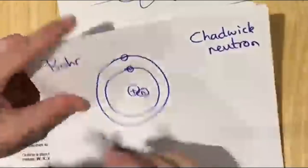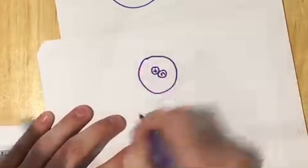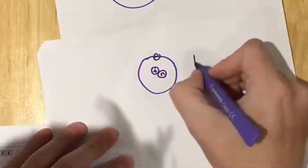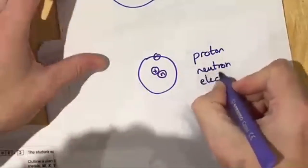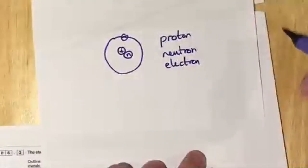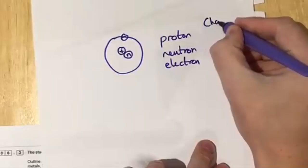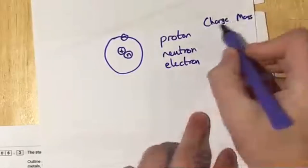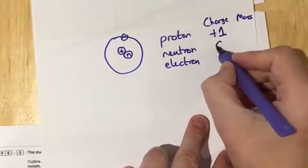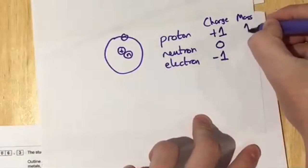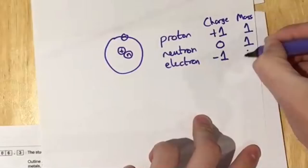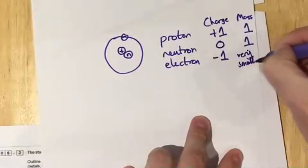That leads us to the atomic structure model we need to know: protons and neutrons in the nucleus, and electron shells around the outside. Protons are positively charged, neutrons have no charge, and electrons are negatively charged. Protons and neutrons have a mass of 1; electrons have negligible mass.